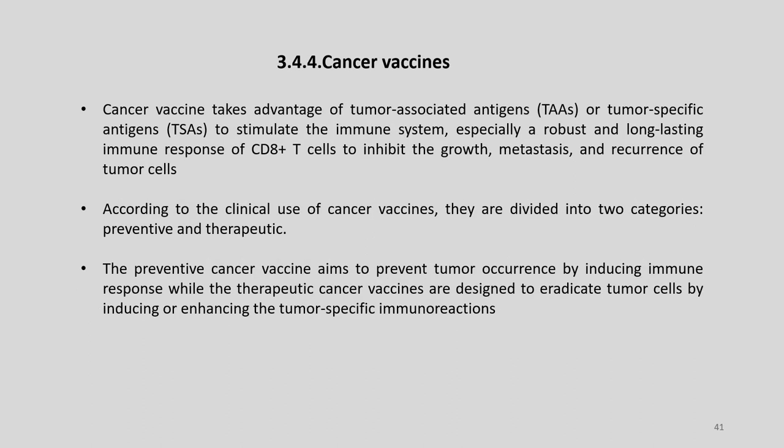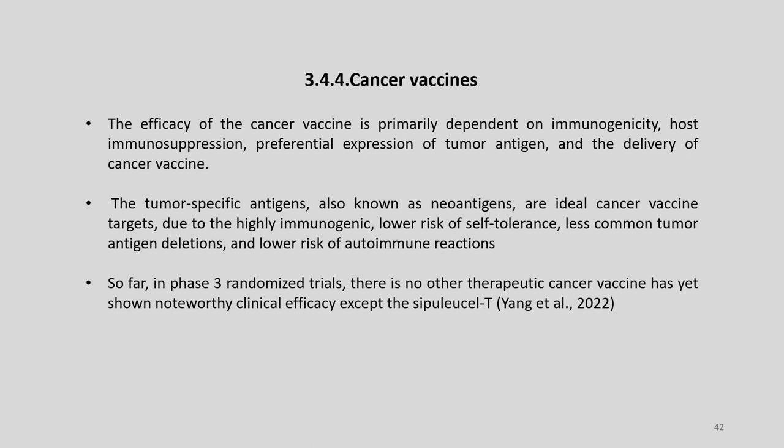Cancer vaccines take advantage of tumor-associated antigens (TAAs) or tumor-specific antigens (TSAs) to stimulate the immune system—especially a robust and long-lasting immune response of CD8+ T cells—to inhibit the growth, metastasis, and recurrence of tumor cells. According to clinical use, cancer vaccines are divided into two categories: preventive vaccines and therapeutic cancer vaccines. The preventive cancer vaccine aims to prevent tumor occurrence by inducing immune response, while therapeutic cancer vaccines are designed to eradicate tumor cells by inducing or enhancing tumor-specific immune reactions.